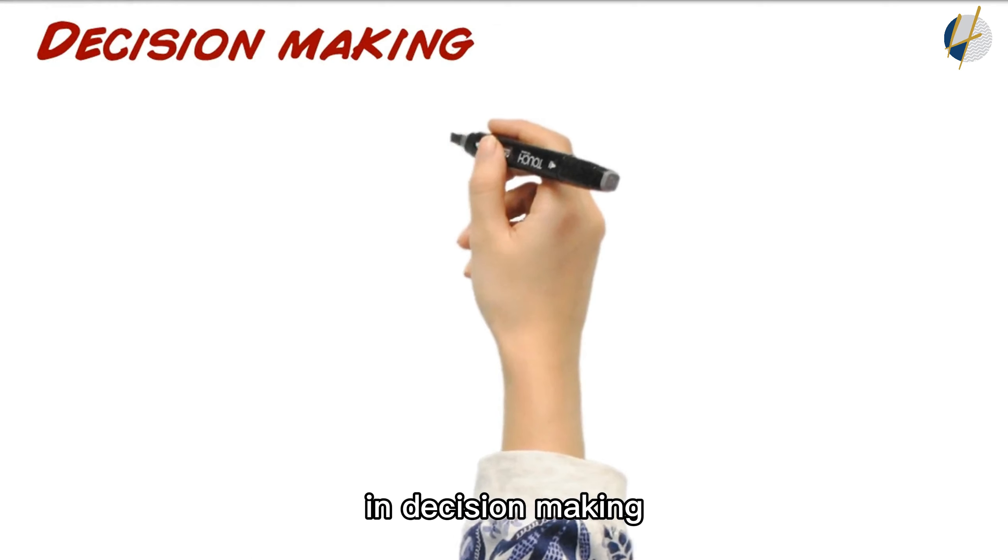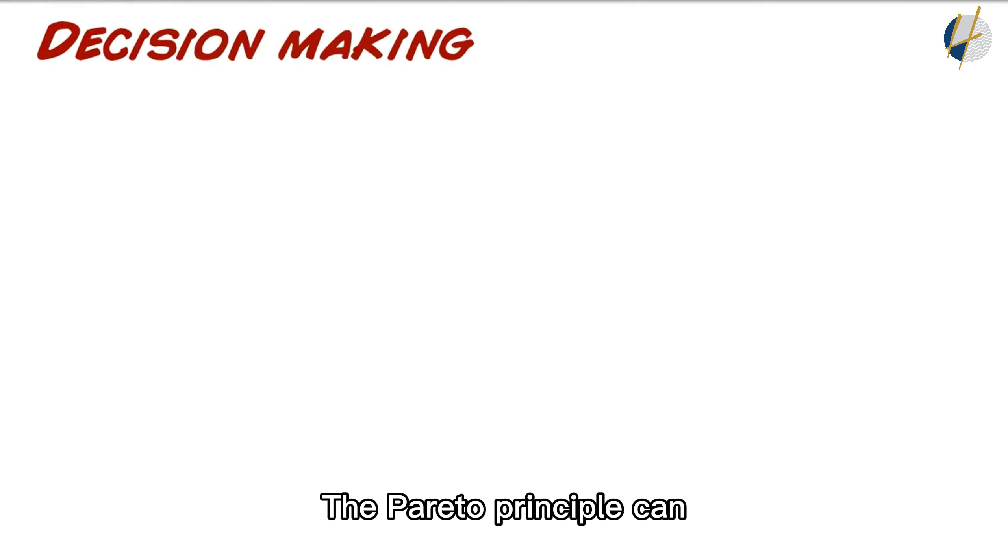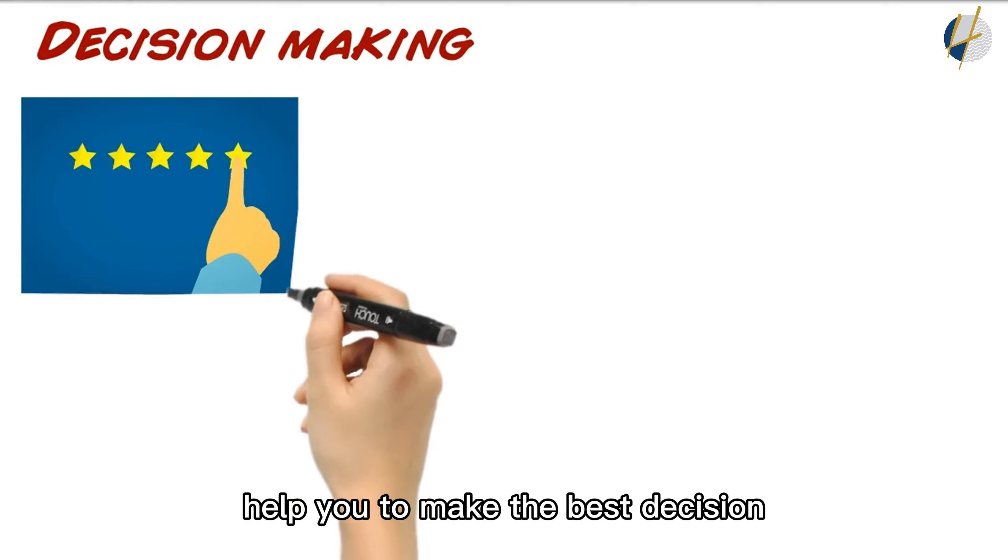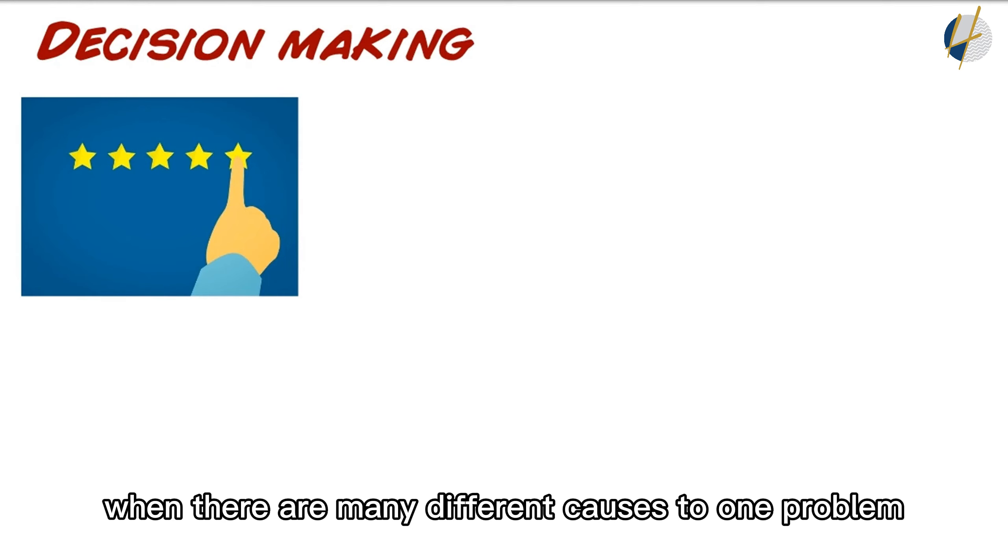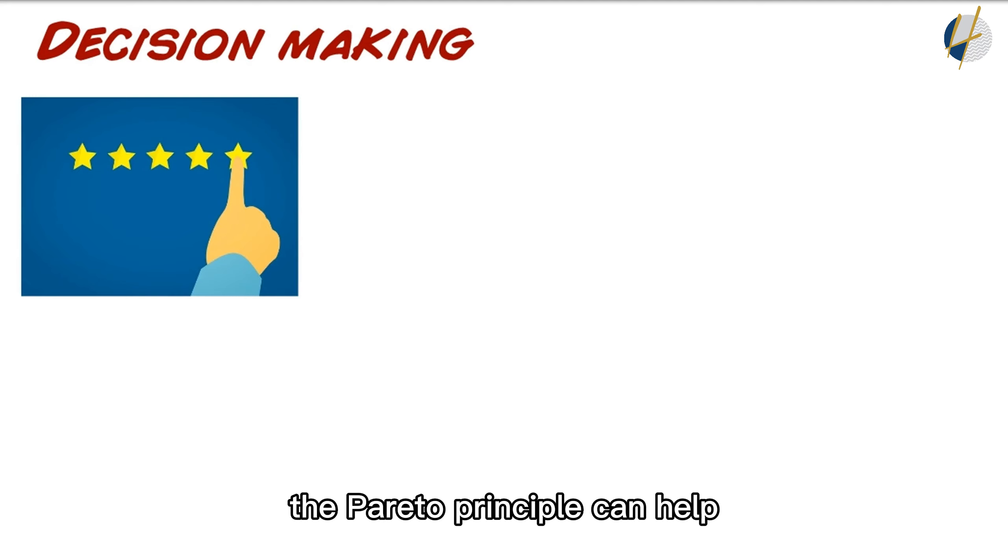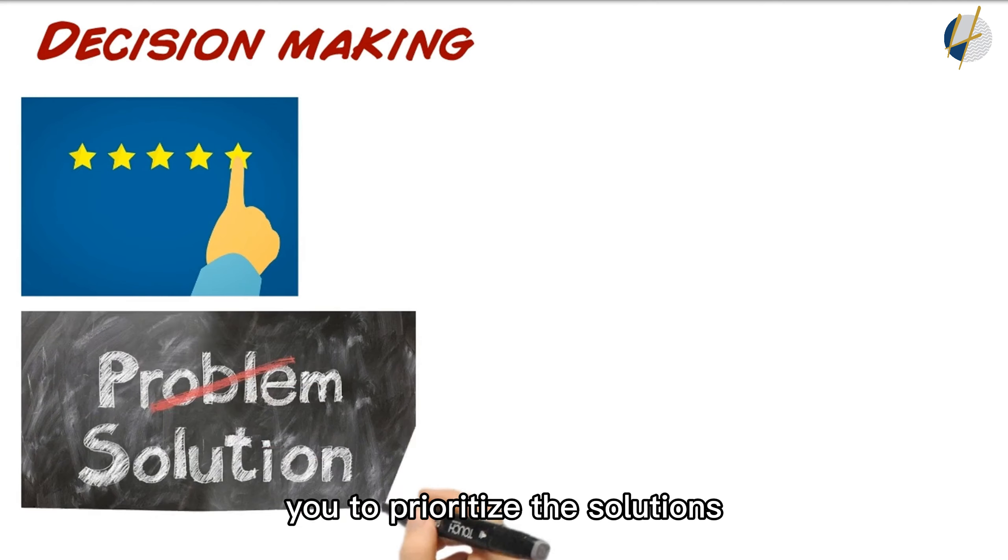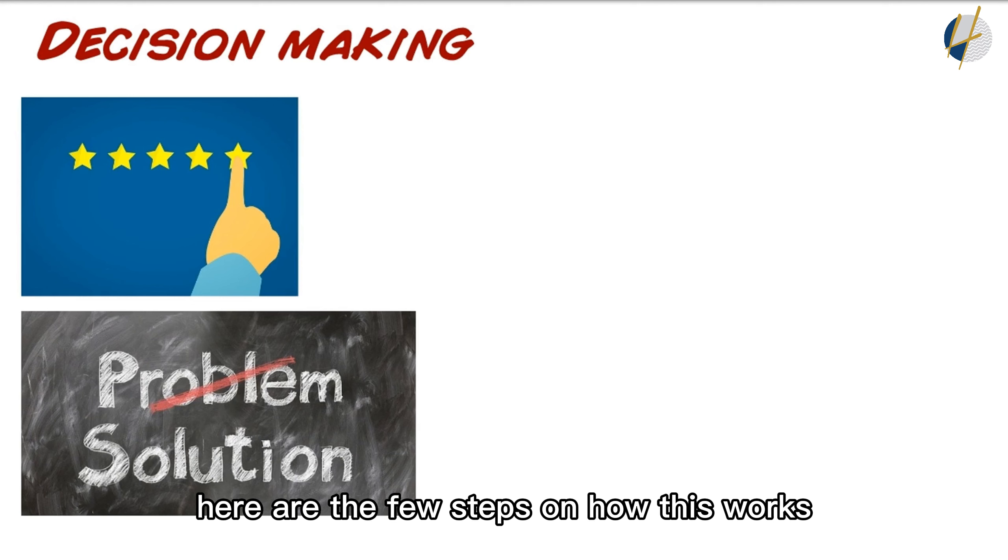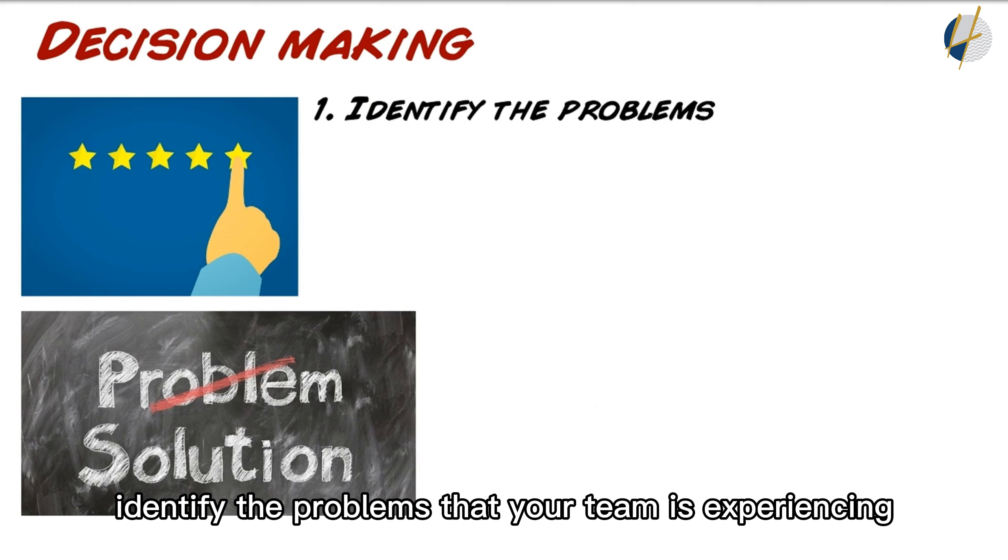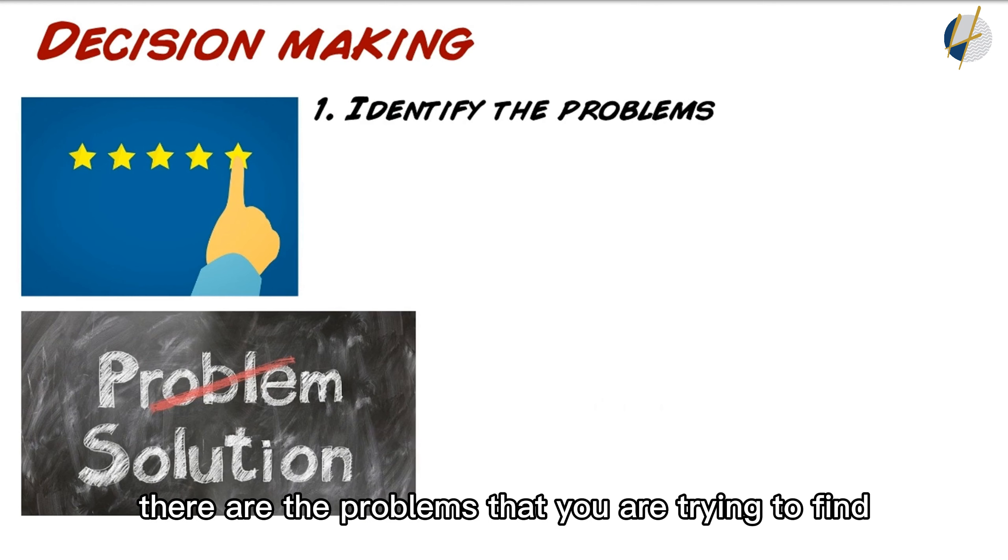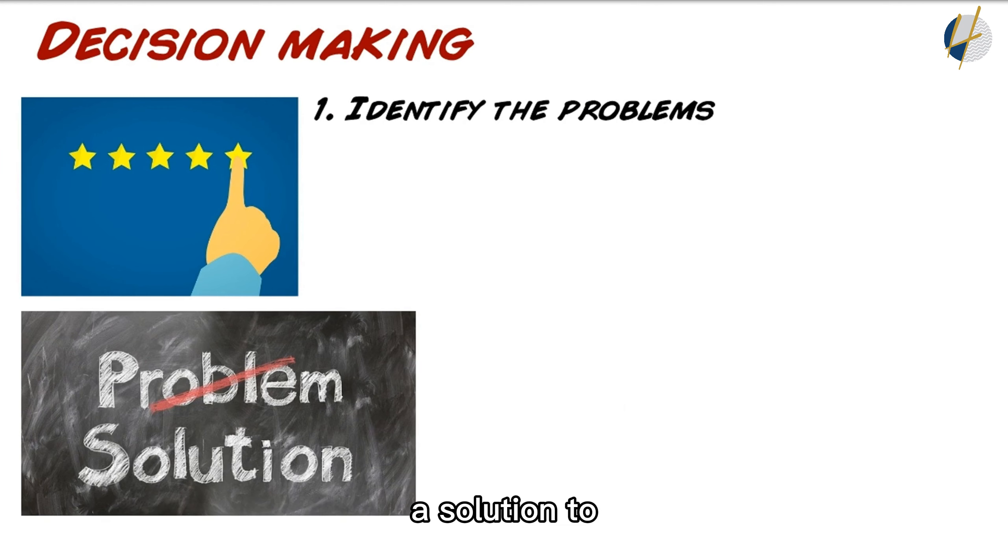In decision making, the Pareto Principle can help you make the best decision during the problem-solving process. When there are many different causes to one problem, the Pareto Principle can help you prioritize the solutions. Here are a few steps on how this works. First, identify the problems that your team is experiencing—the problems that you are trying to find a solution to within this decision-making process.